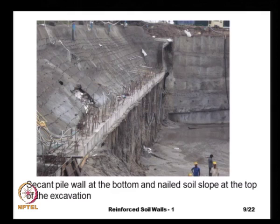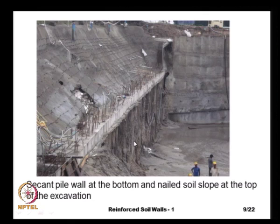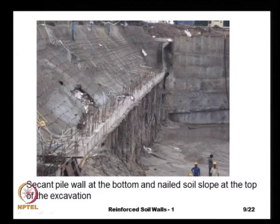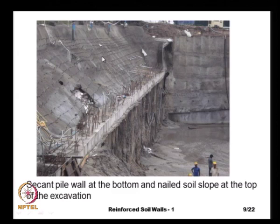Here we see a deep excavation underway in Chennai, supported by secant walls — secant piles at the bottom. This is what we call a diaphragm wall, but here it is made of secant piles that touch each other. Up to some height, the excavation is supported by secant piles, and above that the top part is supported by nails with the surface protected by spray concrete. The projections visible are steel nails that are driven in, and we can see the spray concrete placed there.